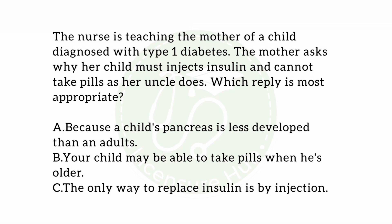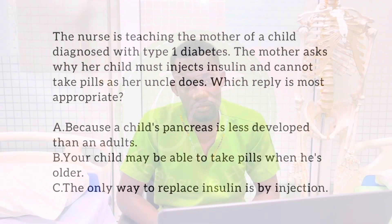The next question reads: the nurse is teaching a mother of a child diagnosed with Type 1 diabetes. The mother asks why her child must inject insulin and cannot take pills as her uncle does. Options are: A) because a child's pancreas is less developed than an adult's; B) your child may be able to take pills when he's older; or C) the only way to replace insulin is by injection. Diabetes mellitus is a disorder of the endocrine system, specifically the pancreas, where there is a problem with the cells that synthesize insulin.